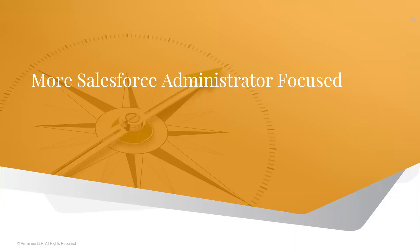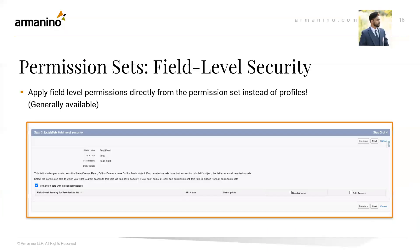Now moving to the admin-focused features. The first one is permission sets and field-level security. With Salesforce letting go of profiles in the near future, permission sets will be primary for user permissions and access. This was in beta before but is now generally available and highly encouraged for admins to start assigning permissions via permission sets. This update also enables you to see each permission set's object permissions for fields without leaving the page.